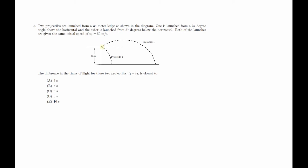What they mean is you have this initial velocity for projectile one that has a magnitude of 50 meters per second, and the angle it makes from the horizontal is 37 degrees. For projectile two, we have the same magnitude, 50 meters per second, however the angle is 37 degrees below the horizontal line.